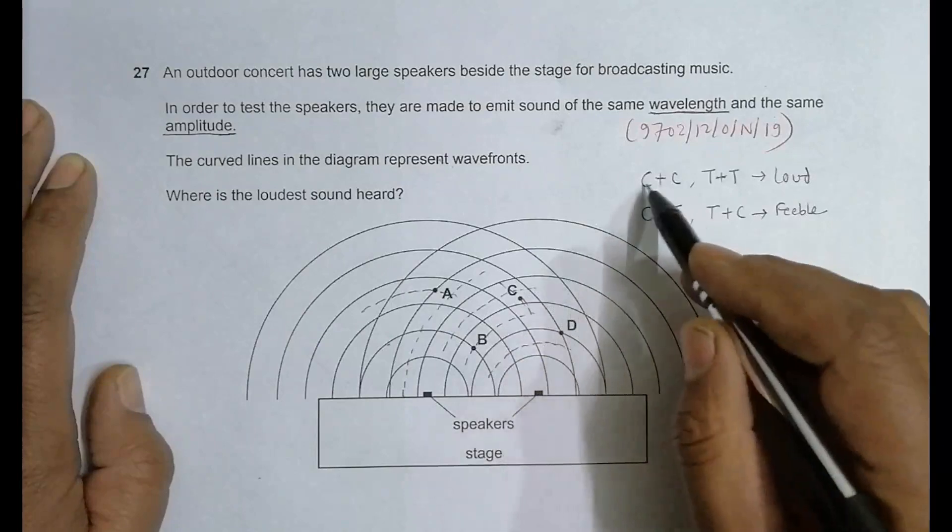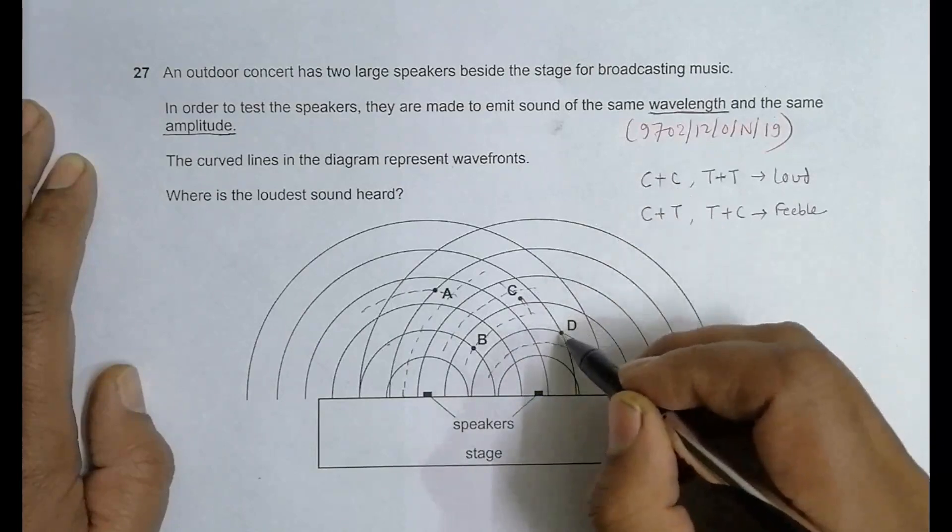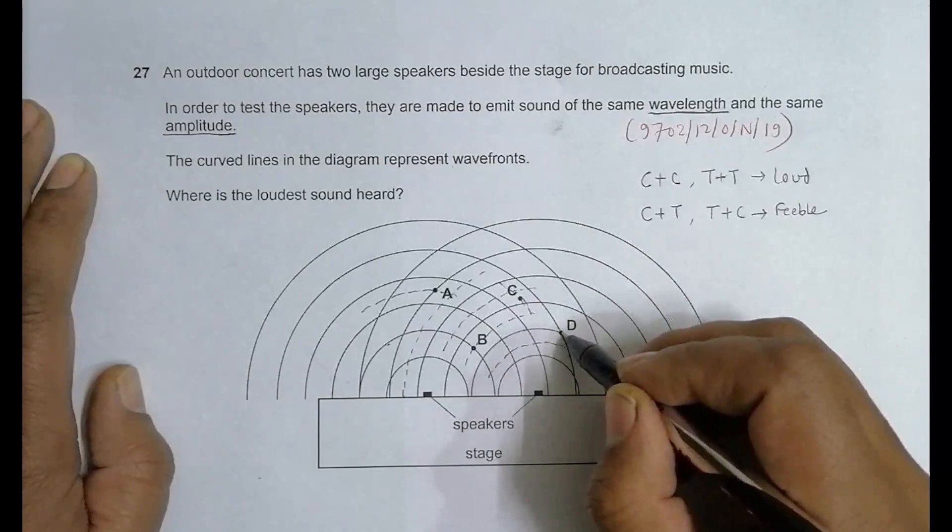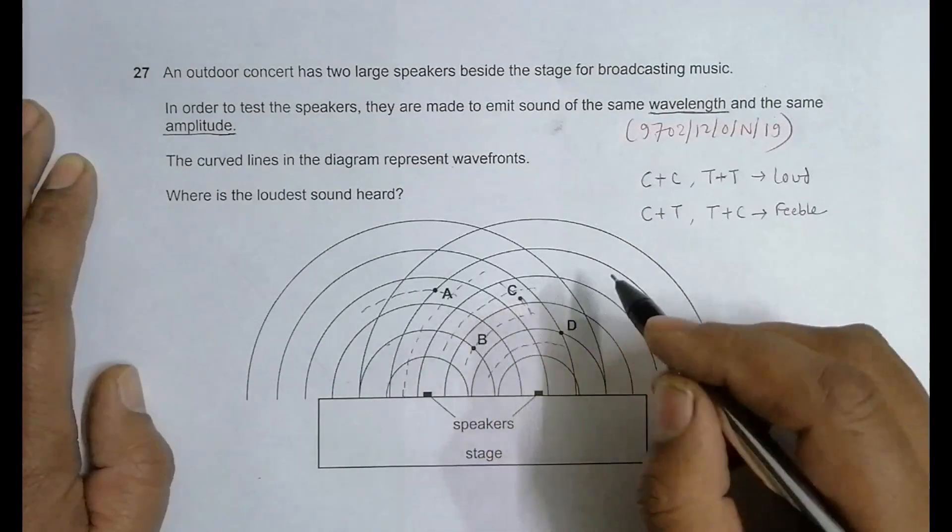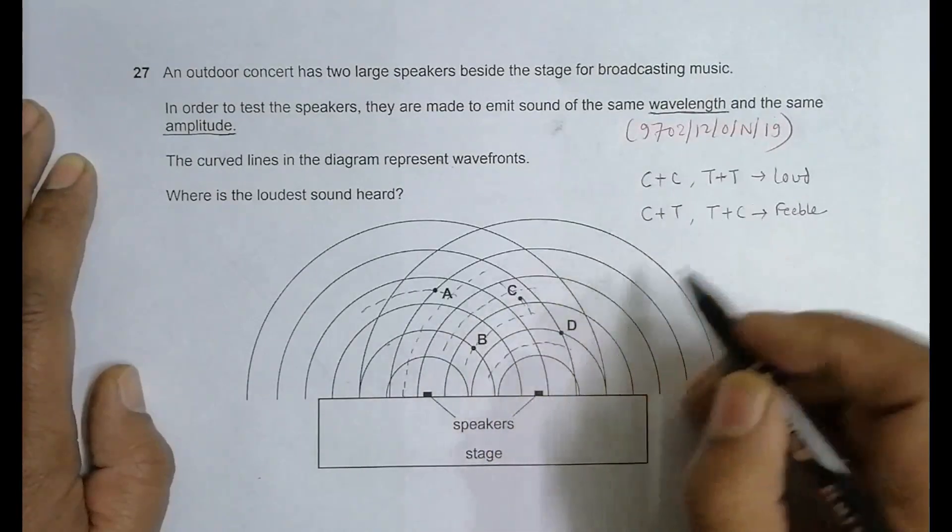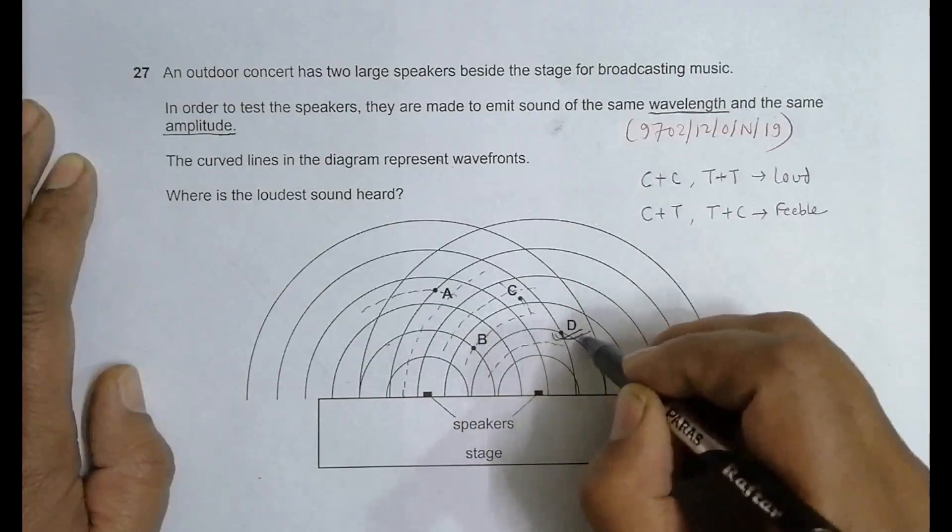Crest plus crest, that's why the sound will be loudest at point D. At other points there will be feeble or somewhere in the middle, so D should be the correct choice.